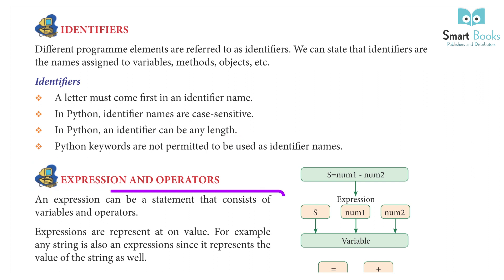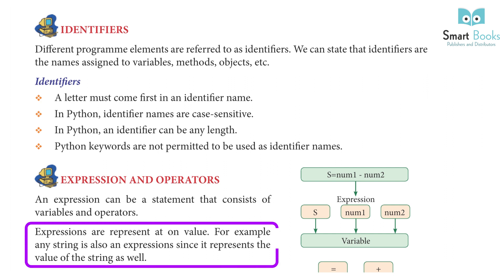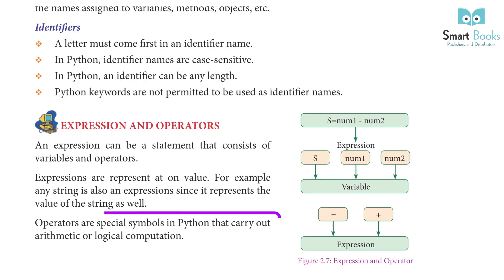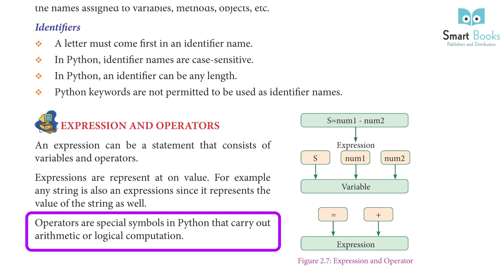Expressions and Operators: An expression can be a statement that consists of variables and operators. Expressions represent one value — for example, any string is also an expression since it represents the value of the string. Operators are special symbols in Python that carry out arithmetic or logical computation.